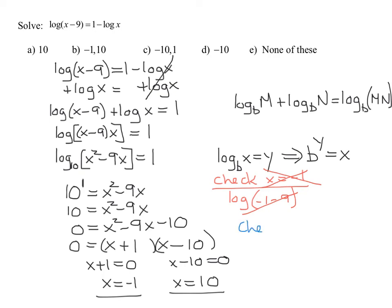So now let's check x equals 10. Plug it into the original equation: the common log of 10 minus 9. Because remember, I'm going to put a 10 here and a 10 over there. Is that a positive number? 10 minus 9 is definitely positive.